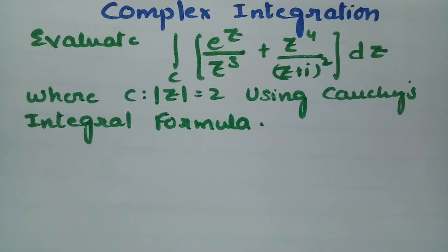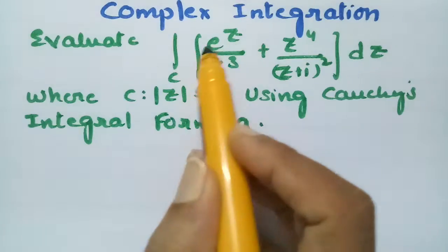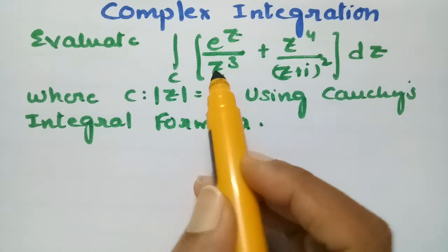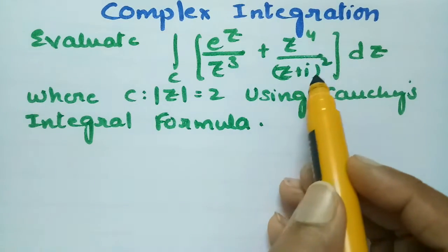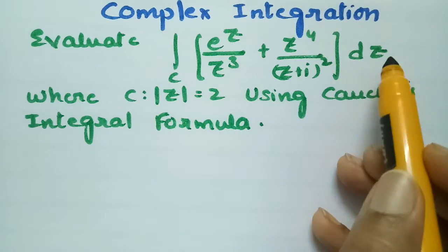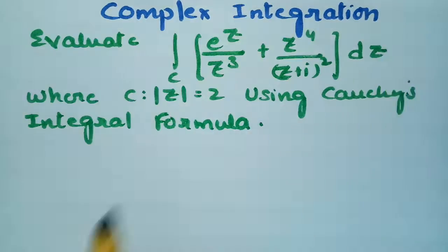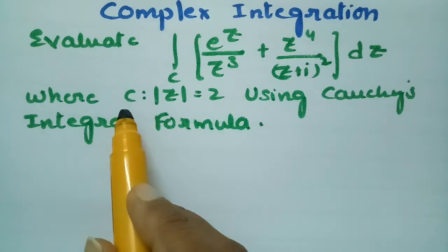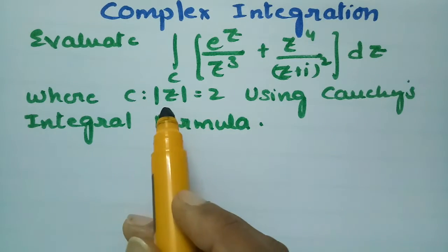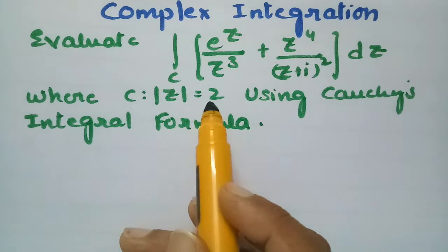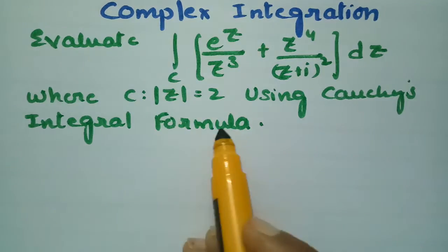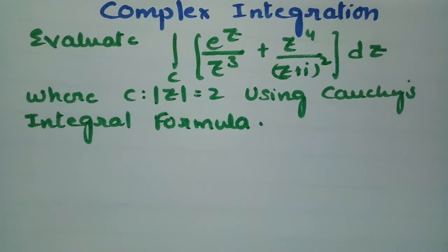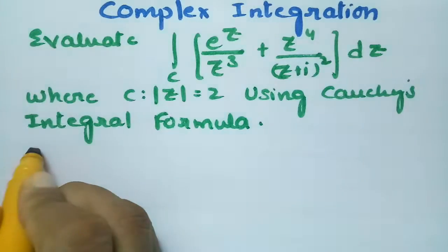This problem is from complex integration. In this video I am going to evaluate the integral of e^z over z³ plus z⁴ over (z + i)² dz, where c is given as |z| = 2, using Cauchy's integral formulae.